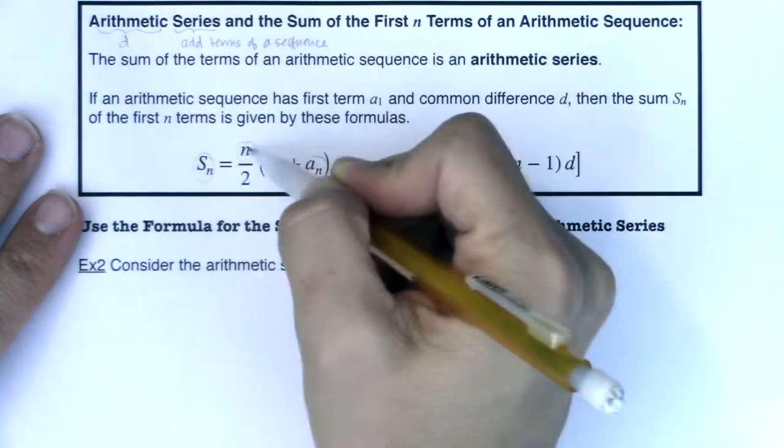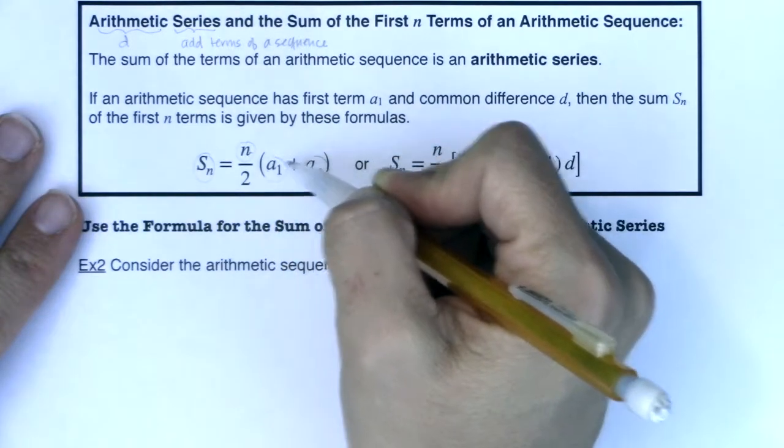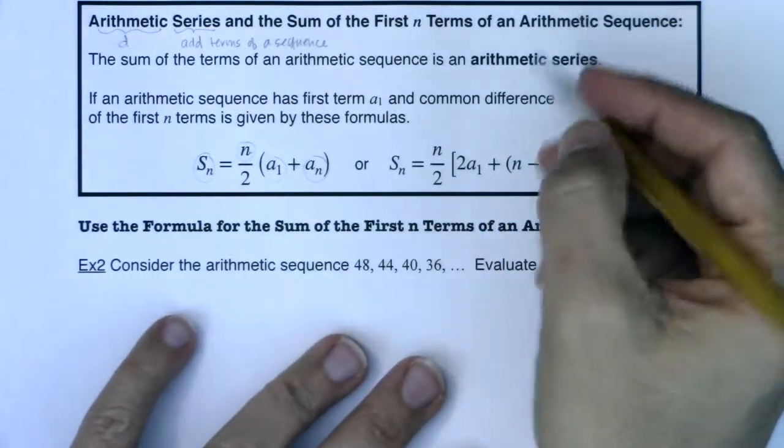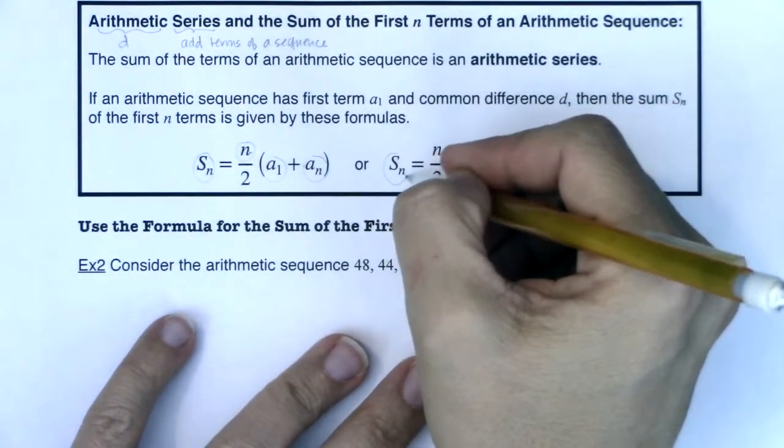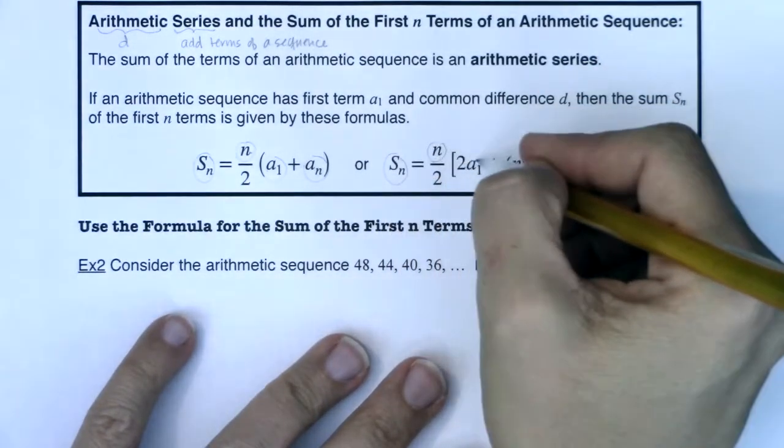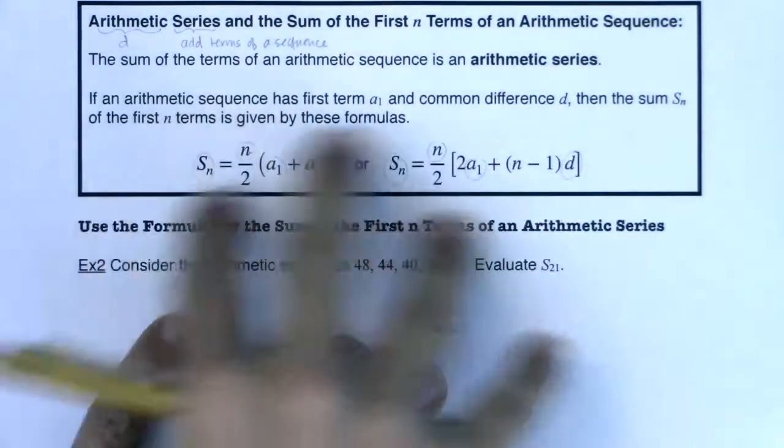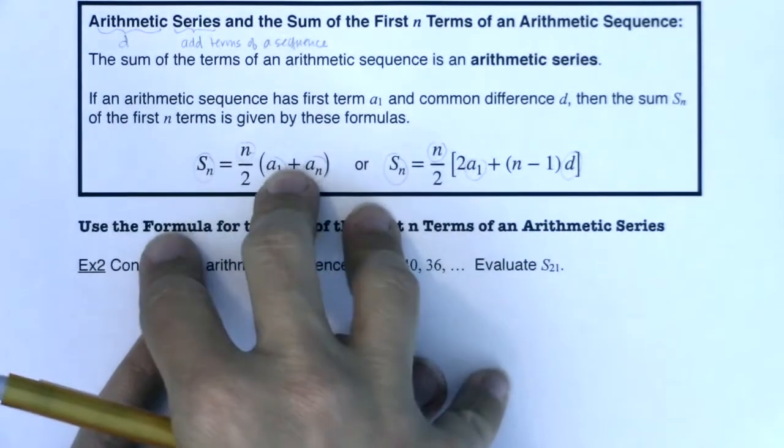You have s_n, which would be a number, n is the term, the nth partial sum that you want. You've got a₁ and a_n. Over here, let's count the variables we have. We have s_n, we have n, we have a₁, we already counted n, and we have d. So in either of these formulas, you have four variables.